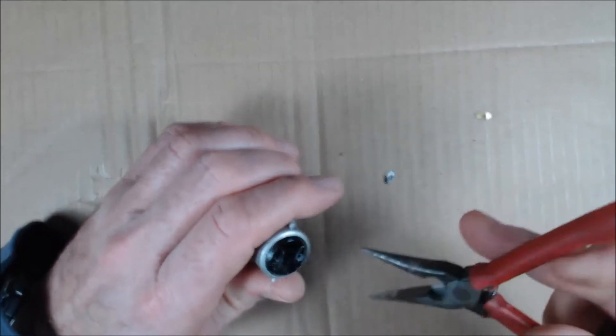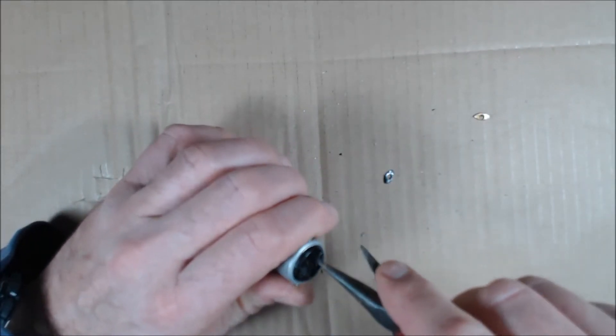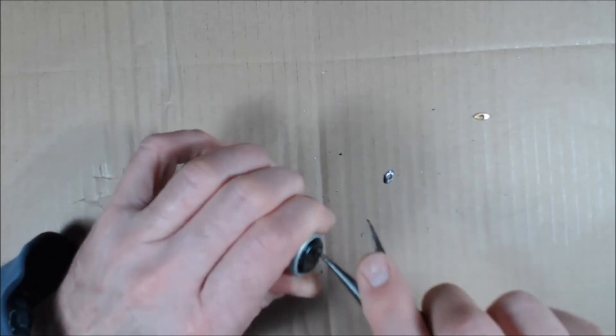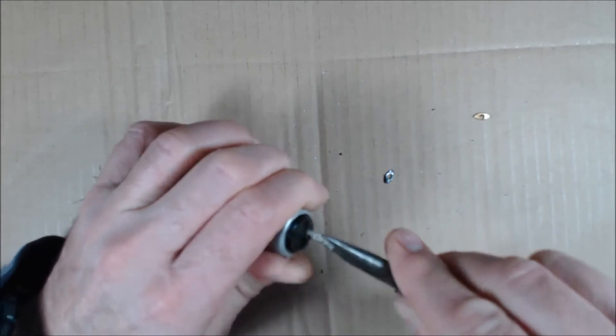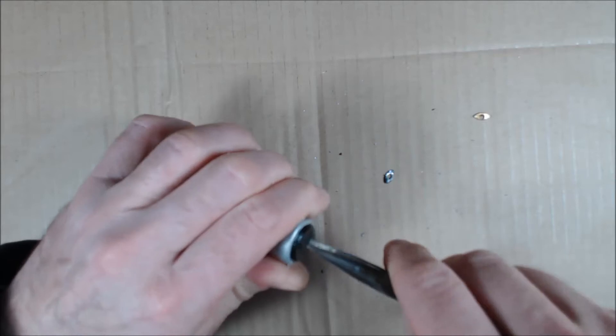So now use the thin nose pliers to break open the insulator. The material is pretty tough but eventually it gives way.